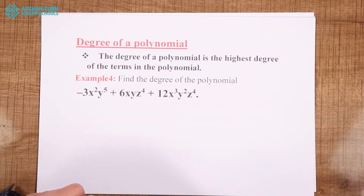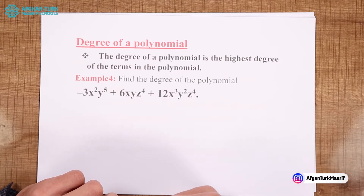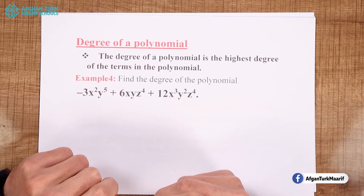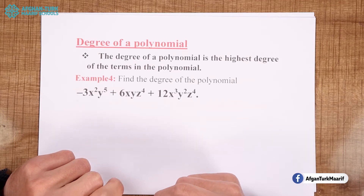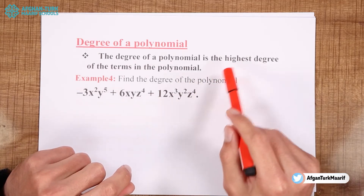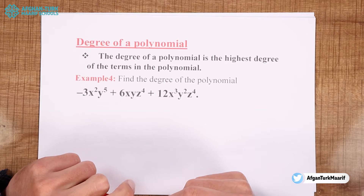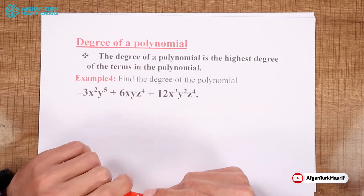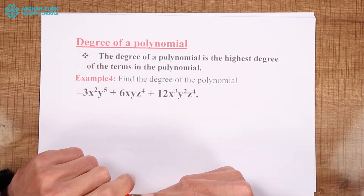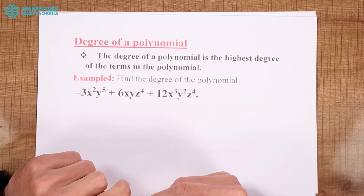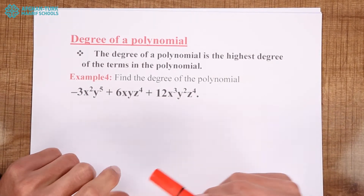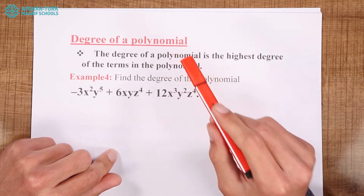Welcome back students. In the second video we will talk about degree of polynomial. So how do we find the degree of a polynomial? The degree of a polynomial is the highest degree of the terms in the polynomial. A polynomial consists of monomials, and the monomial with the highest degree is the degree of the polynomial.